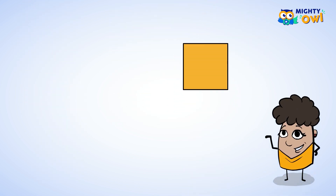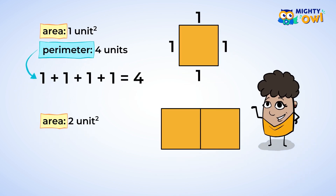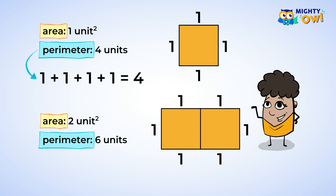We already learned about area by looking at square units. Remember that each square unit has the side length of one unit, and so this square unit has the area of one square unit, but it has the perimeter of four units. So if one square unit has a perimeter of four units, does that mean that a shape with two square units has a perimeter of eight units? There's only one way to find out. Counting the sides, the perimeter of this shape is six units. How interesting!